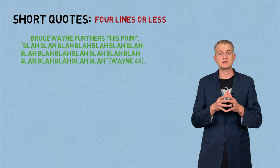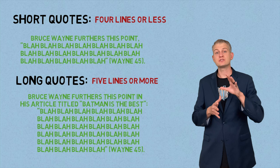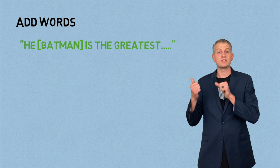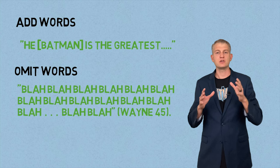For a short quote of four lines or less, cite it inline as shown. A long quote is five lines or more — after you introduce the source, indent the quote. If you need to add words to a quote, do it like this in brackets. If you're using a quote but only need the first and last part, you can remove the middle and add three dots.